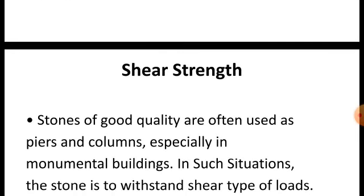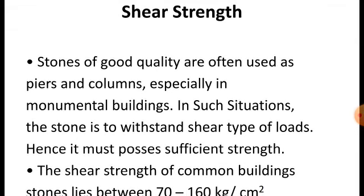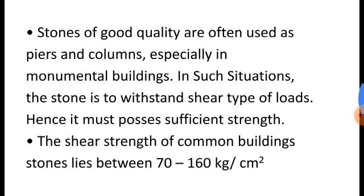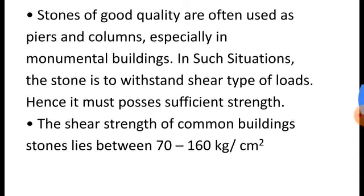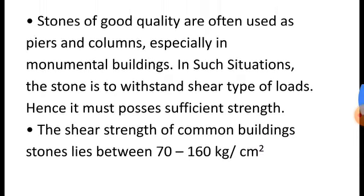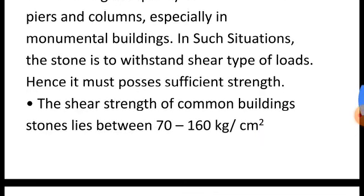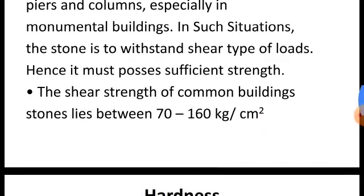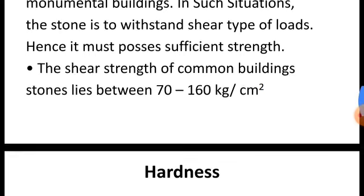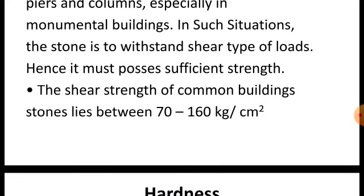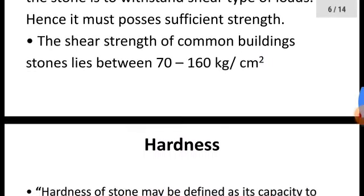The third requirement is the shear strength. Stones of good quality are often used as piers and columns, especially in monumental buildings. In such situations, the stone must withstand shear type loads, hence it must possess sufficient shear strength. The shear strength of common building stone lies between 70 to 160 kg per centimeter square.